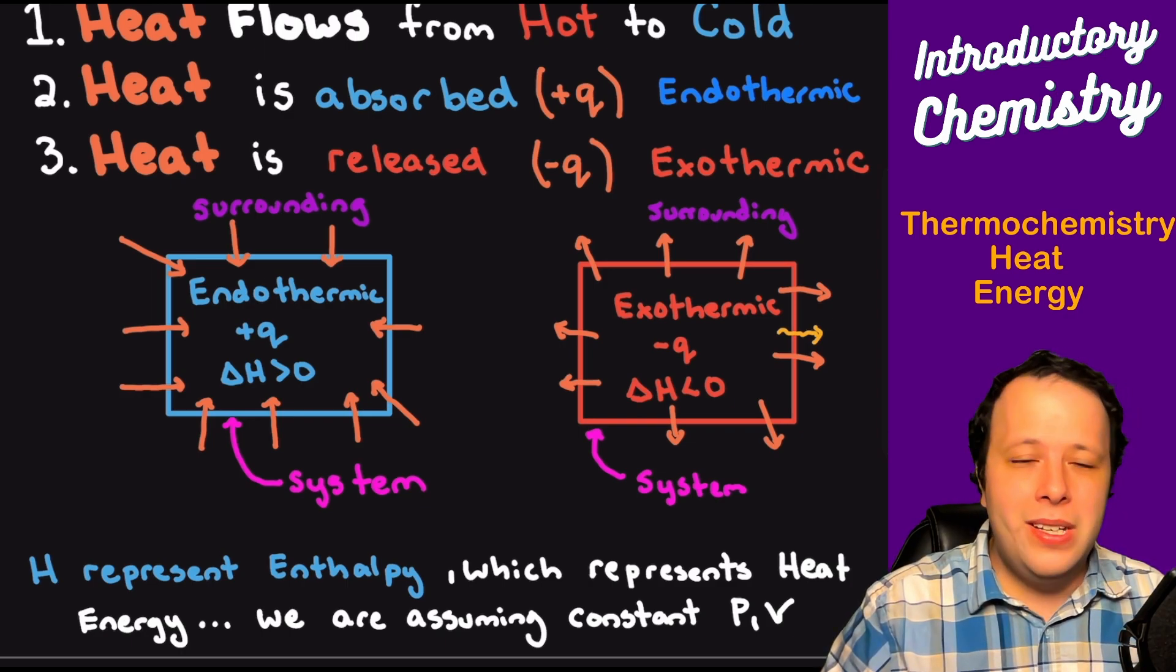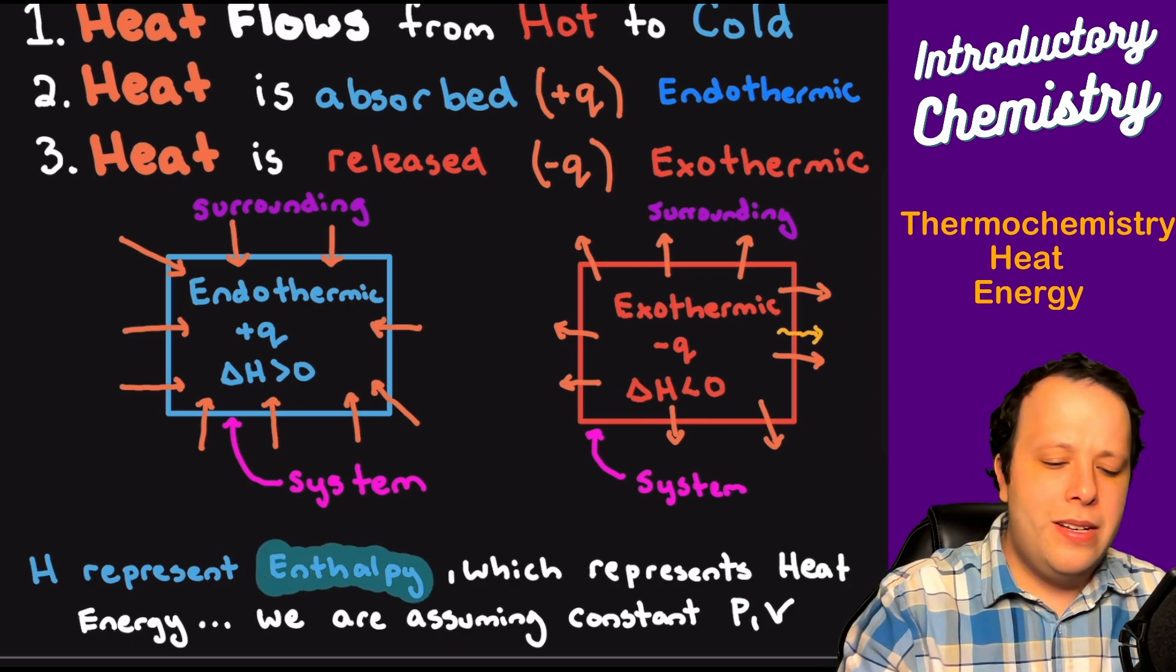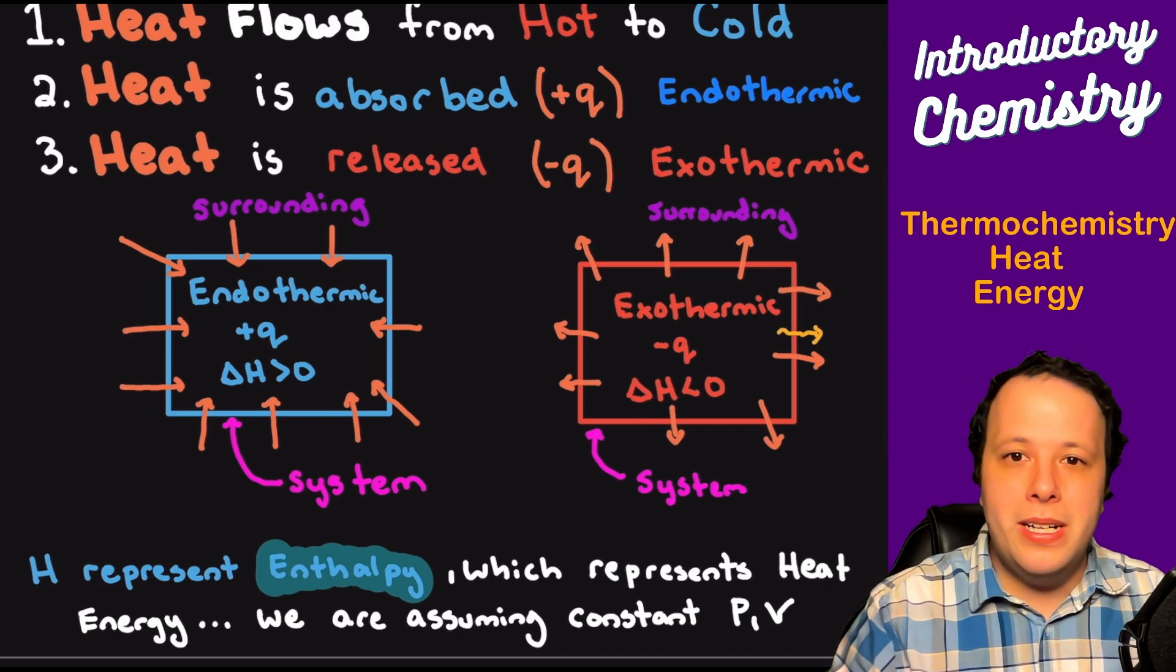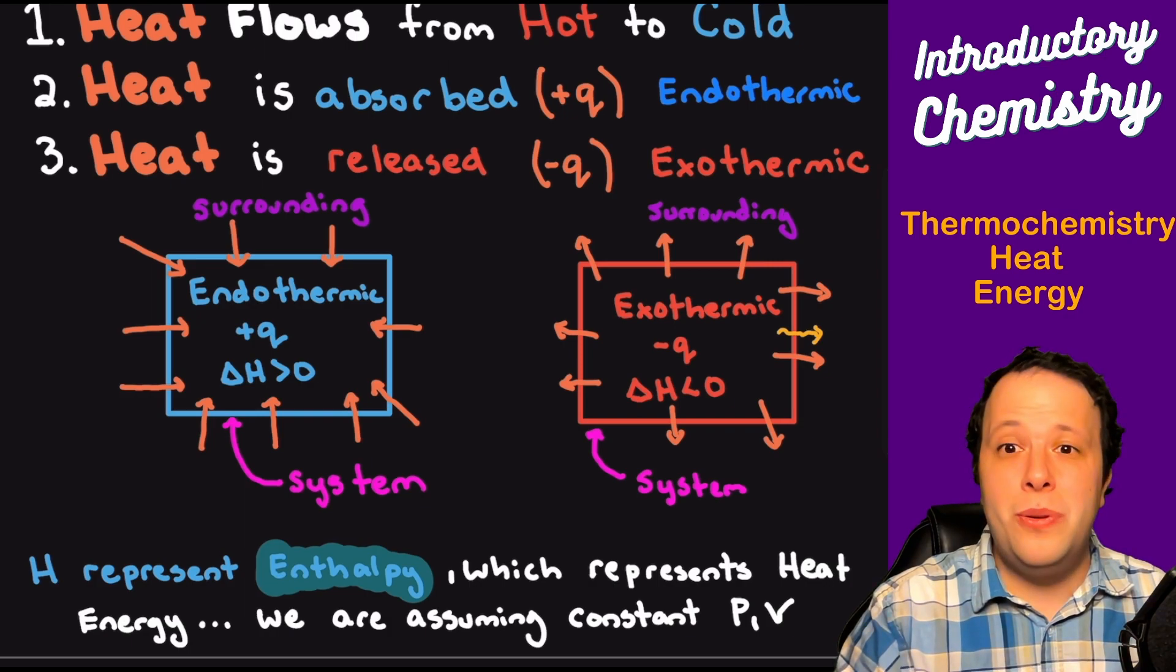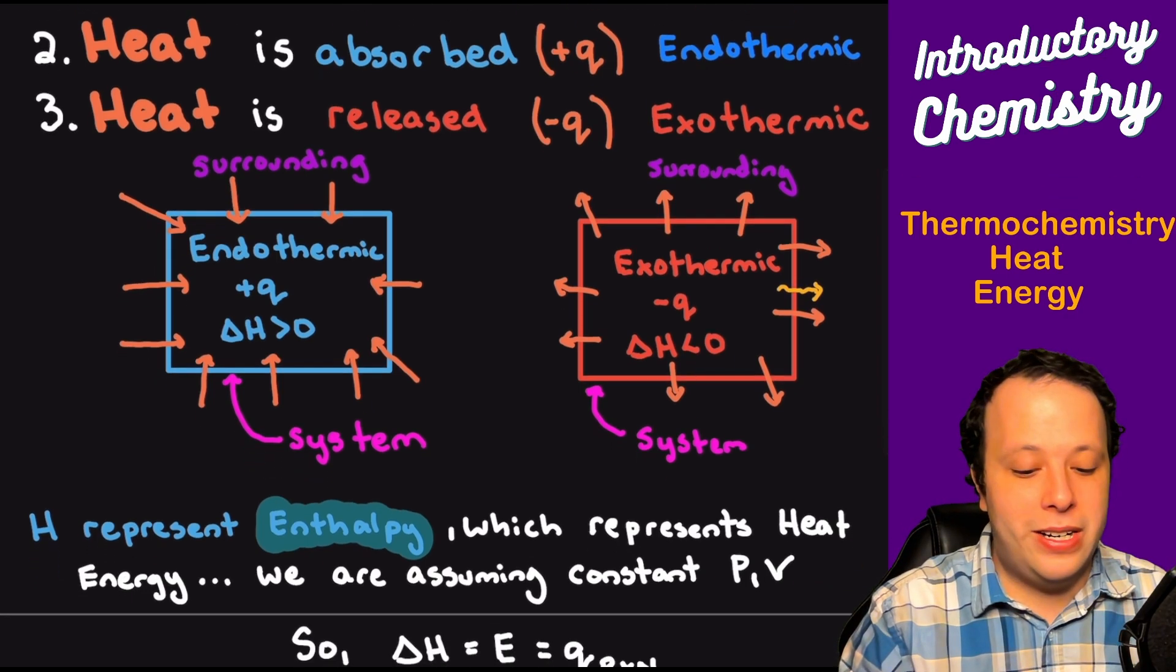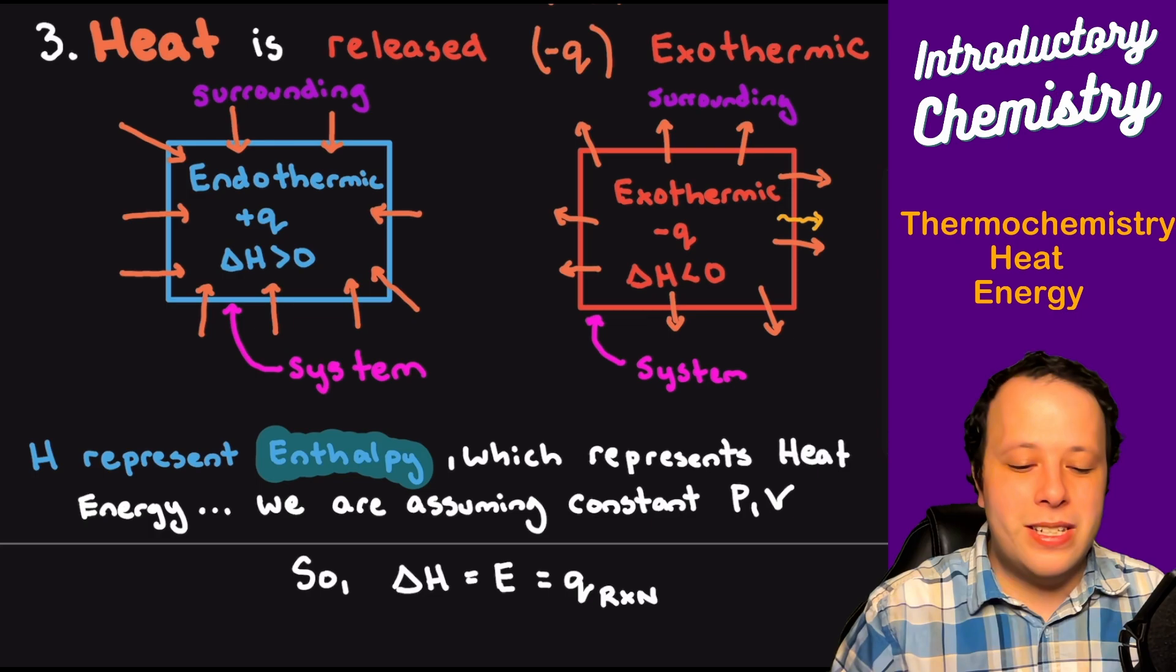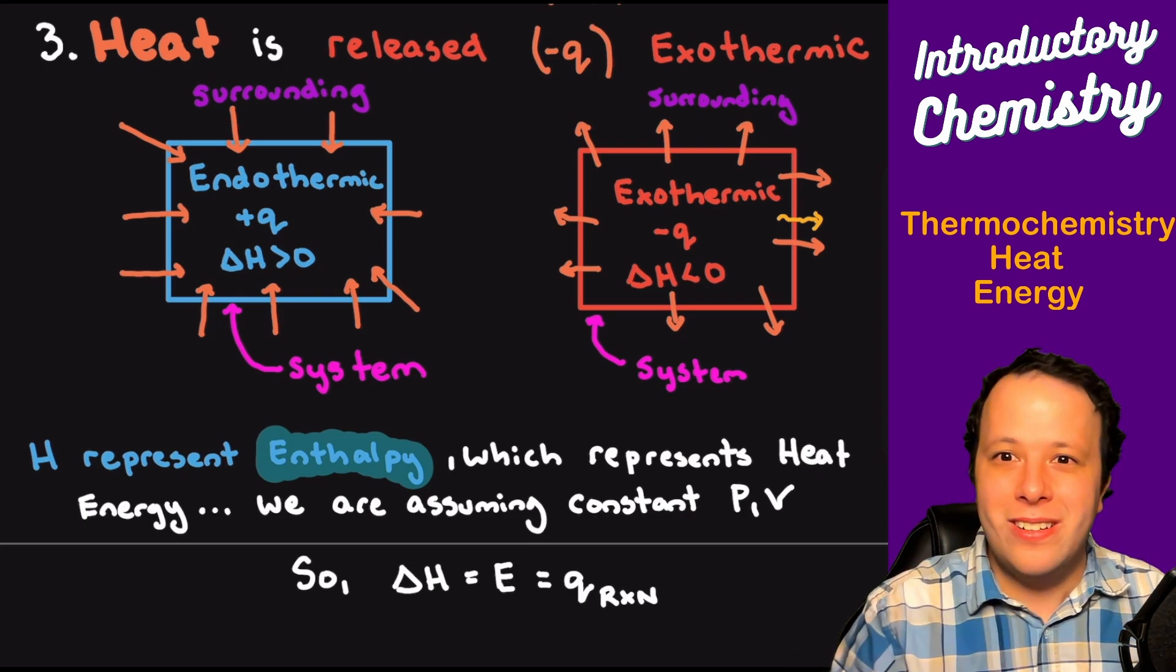One thing you might see here is the letter H written. This stands for the term enthalpy. There is a chemical formula for this—it represents heat energy and it's related to pressure and volume. But to simplify this course, what we're going to do is say that heat, or Q, is equal to enthalpy because we are dealing with constant pressure and constant volume to simplify our calculations. So essentially delta H is going to equal your energy, which is equivalent to your reaction heat. If you see an H value, it represents a form of energy, and this is what we're going to use to describe changes of phase like boiling and freezing.